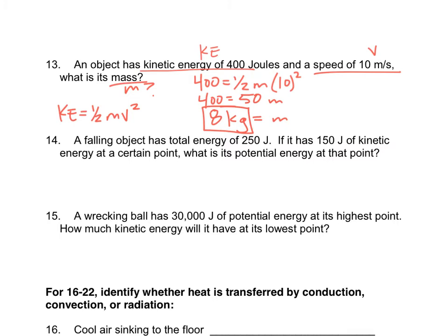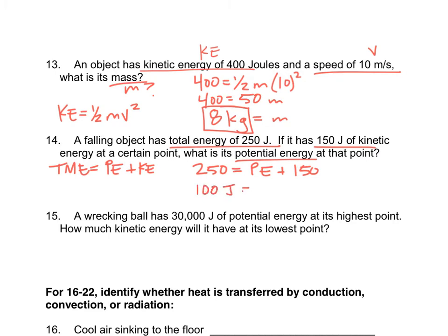Number 14: an object has total energy of 250 joules and kinetic energy of 150 joules — find its potential energy. Total energy = PE + KE, so 250 = PE + 150. Subtracting 150 from both sides gives PE = 100 joules of potential energy at that point.